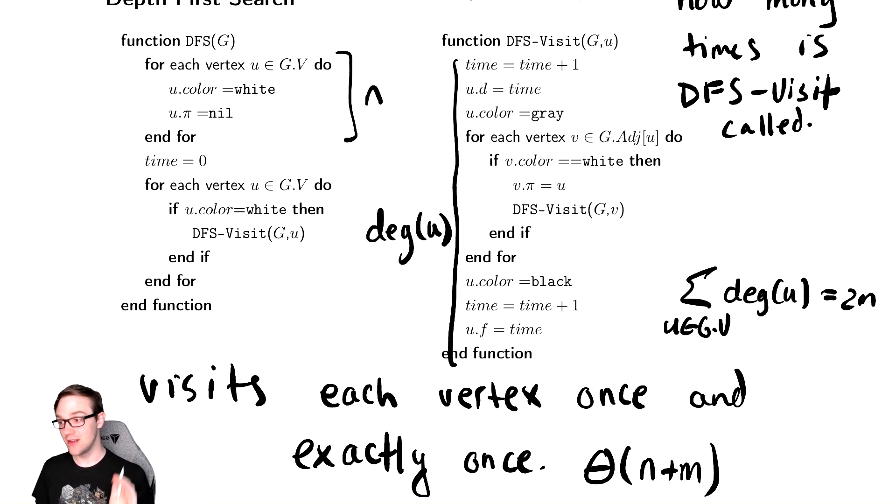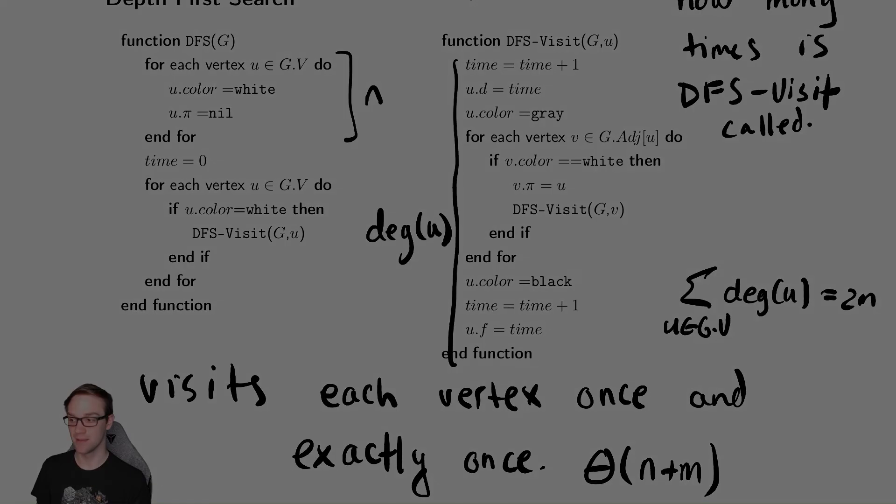If you want to do a similar analysis, you may have learned at some point that recursion can always be implemented via a stack. At least a single recursive call especially can. So you could re-implement this with a stack and see that it looks almost identical to breadth-first search, just with a stack instead. And then you could analyze the runtime that way if you want further convincing that this takes n plus m time.